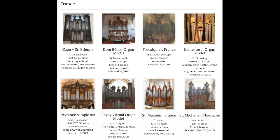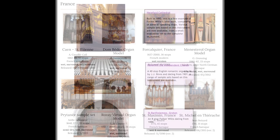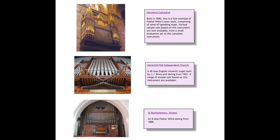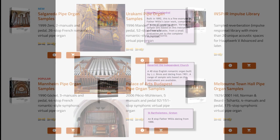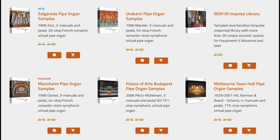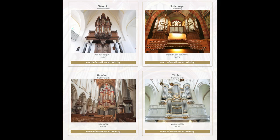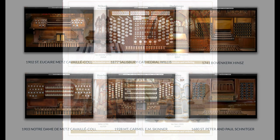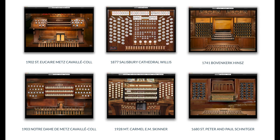You might have noticed that there are many different styles of organs that are available — French organs, Dutch organs, English organs, German organs, American organs, Australian organs. There are organs from all over the world, and you might ask why you would want to have more than one organ available. The answer is that organs from different parts of the world are built differently, have different sonic characteristics, and have music written for them that takes advantage of the strengths of those building styles.